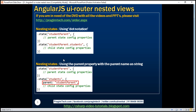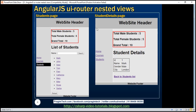Another way to nest states is by using the parent property with the parent name as a string. In this example, we use the parent property, and the value for this parent property is the name of its parent. So again, studentParent is the parent state and students is the child state. Let's understand these nested states and views with an example.